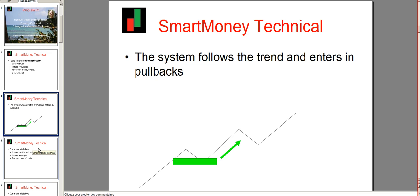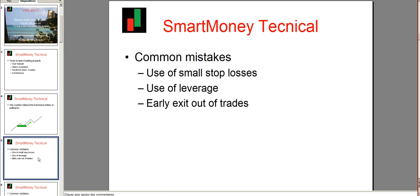Before going into the details about the indicator, I want to give some general indications about how to trade forex and the common mistakes of forex traders. If you don't understand this, it can be a problem to trade with smart money and understand why it works. The common mistakes are: the use of small stop losses, use of leverage, and early exit out of trade.